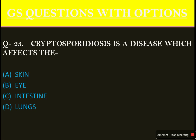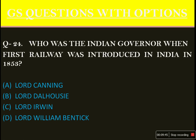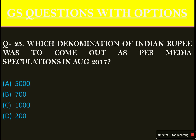Cryptosporidiosis is a disease which affects the — the answer is option C: the intestine. Who was the Indian Governor-General when the first railway was introduced in India in 1853? The answer is Lord Dalhousie, option B. Which denomination of the Indian rupee was to come out as per media speculations in August 2017? An absurd question, but the answer was option D: the 200 rupee note.